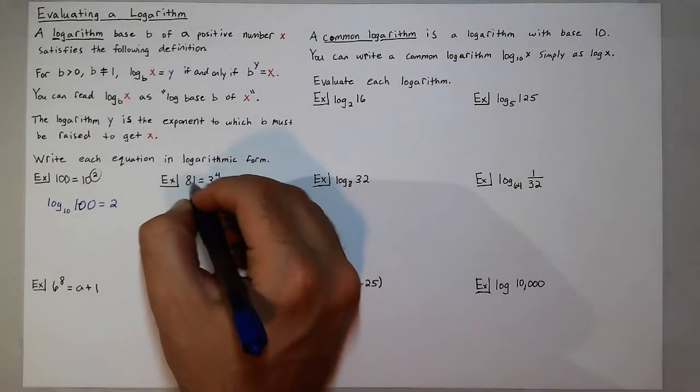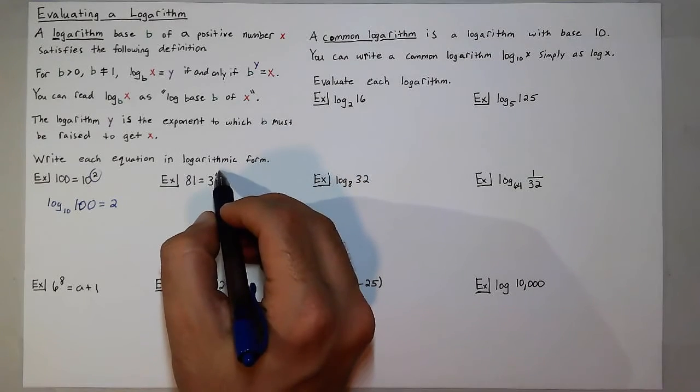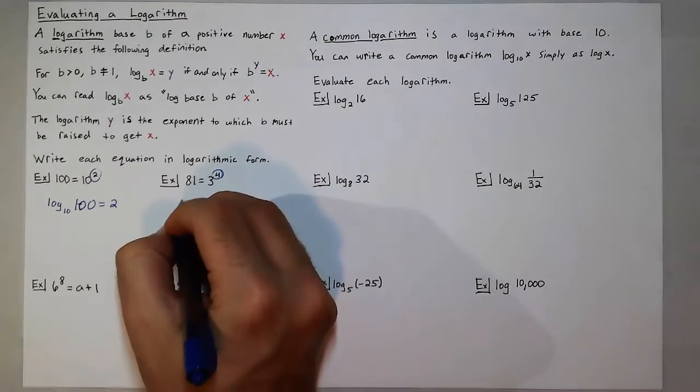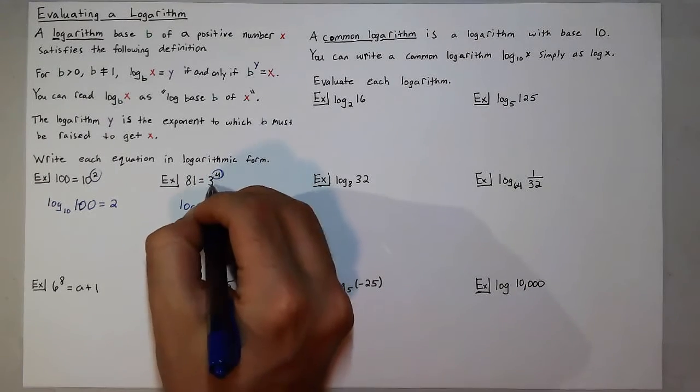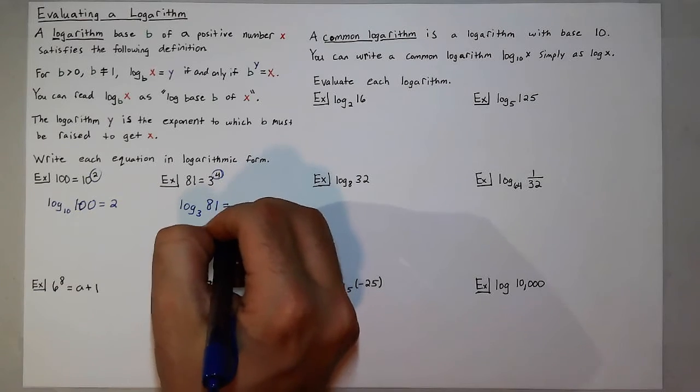We have 81 is equal to 3 to the 4th. Again, your logarithm is equal to that power. So we say log base 3 of 81 is equal to 4.